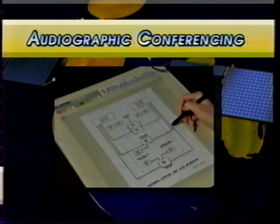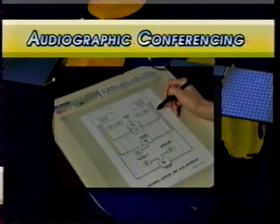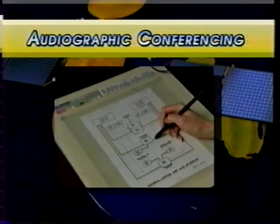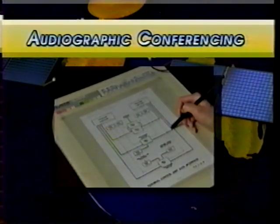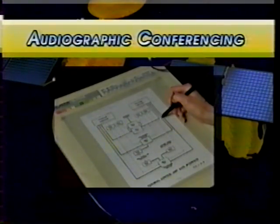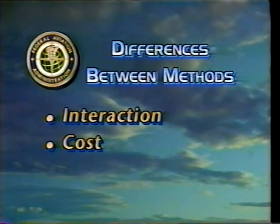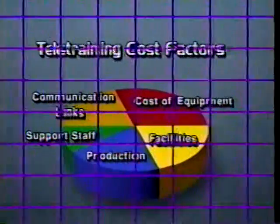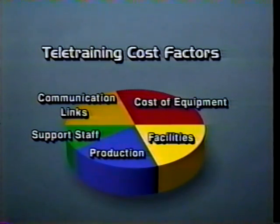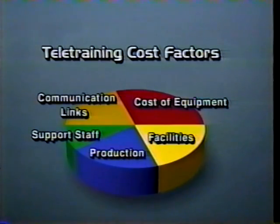Participants can write, type, or draw using computer-based devices such as electronic tablets, boards, pointers, and graphics systems. Teletraining technologies also differ in cost. As you evaluate them, consider the cost of equipment and facilities, communications links, support staff, and production required for each.